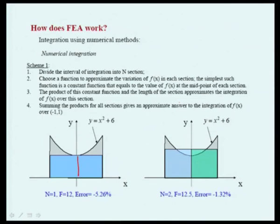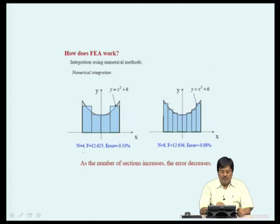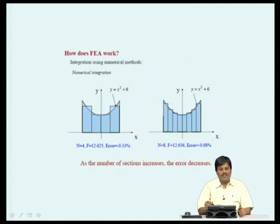For example, if we divide the region by one segment, the average error is about minus 5.26 percent. If we increase to two segments, the error decreases from 5.26 to 1.32. With four segments, it reduces drastically to 0.3 percent, and with more segments it reduces to almost negligible. FEM works exactly on this principle: the more elements you choose within the domain, the more accurate the answers. This is the principle that FEM works on.